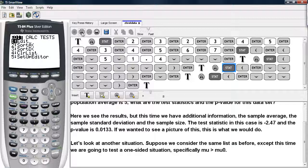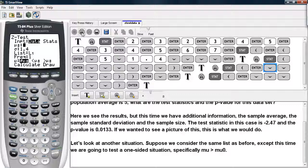Well, you hit Stat, go under Tests, select Z Test. We're keeping everything the same, except this time we're going to select the greater than option under the alternative right here, because that's what we want to test now.